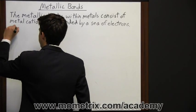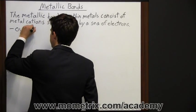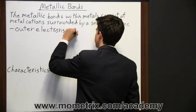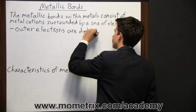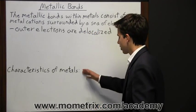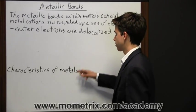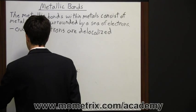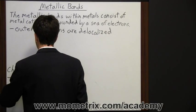So I'm going to write up here that the outer electrons are delocalized. And now I'm going to write down here characteristics of metals. So because the outer electrons are delocalized, metal can be malleable or easily shaped.